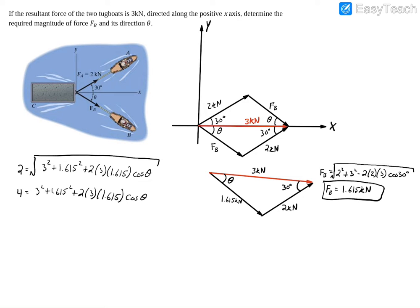Now we just need to isolate for theta one step further, so I'm going to do 4 subtract 3 squared subtract 1.615 squared, and then this term here is all multiplied by cosine theta, so we'll just divide it by that. So we'll have 2 times 3 times 1.615, and all this equals cosine of theta.